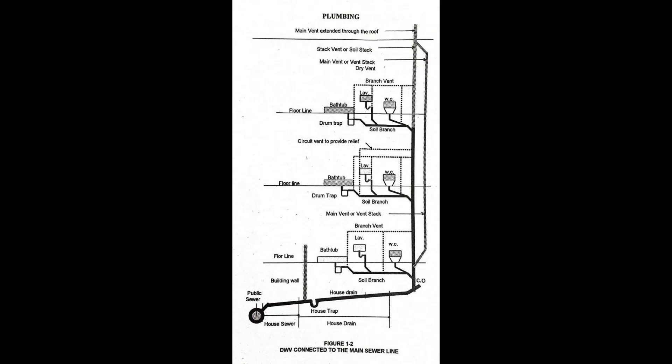Sump is a pit or receptacle at a low point to which liquid wastes are drained. Trap is a fitting or device designed to provide, when properly vented, a liquid seal that will prevent the back passage of air without materially affecting the flow of sewage through it.